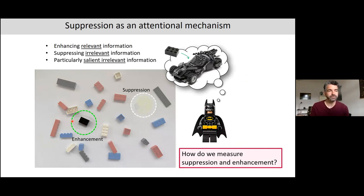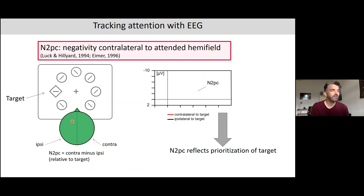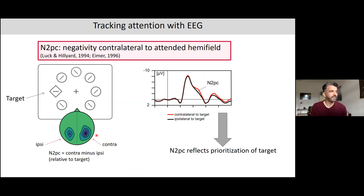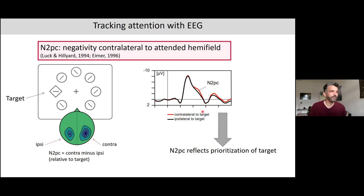So how do we measure suppression and enhancement? An important measure of attention enhancement is the N2PC component — a negativity contralateral to the attended hemifield. If you have a target in the left hemifield, you see a larger negativity in the right hemisphere compared to the left. As a line plot, this shows the typical N2PC shape, usually between 200 and 300 milliseconds, reflecting the prioritization of a target.